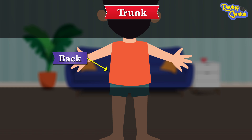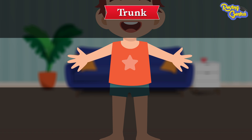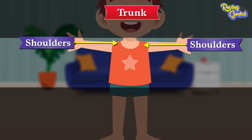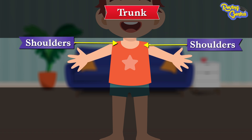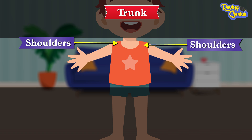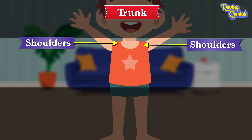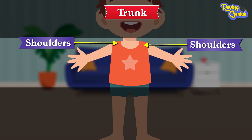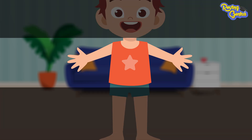Our back is behind the chest and abdomen. Our shoulders are joints that connect the upper limbs to our trunk. It allows us to move the parts of your body. Now let's talk about the upper limbs.